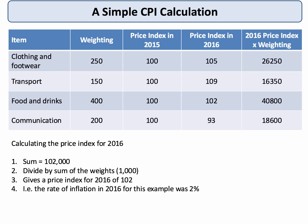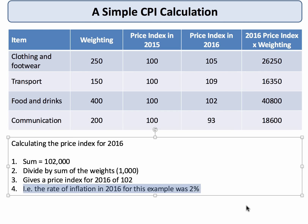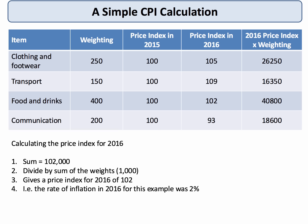Putting in the 2016 price index multiplied by the weightings, we get four numbers. The sum of the index is 102,000. Divide by the sum of the weights — 1,000 — and we get a price index for 2016 of 102. This means the rate of inflation this year was 2%. Food and drink went up by 2% and was heavily weighted; communication had some deflation; the other two items rose by more than 2%. But according to this weighted price index, prices went up by 2% — which conveniently matches the inflation target.